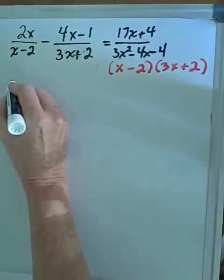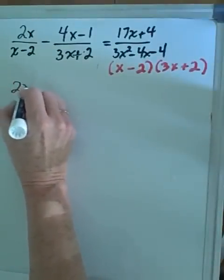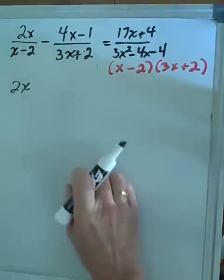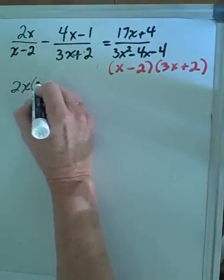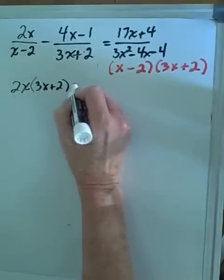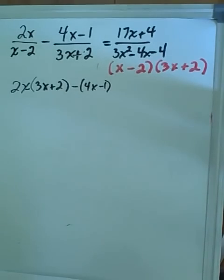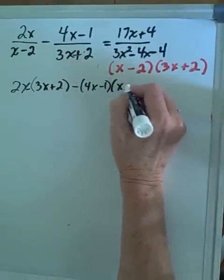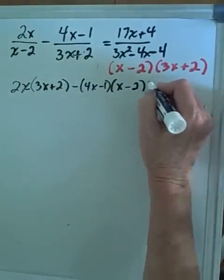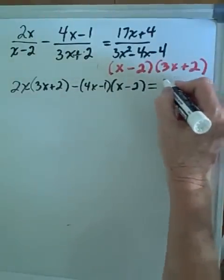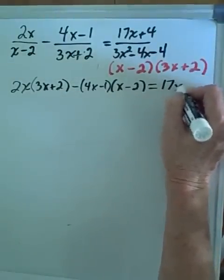For the first term 2x over x minus 2: the x minus 2 cancels, leaving 2x times 3x plus 2. For the second term with 4x minus 1 over 3x plus 2: the 3x plus 2 cancels, leaving x minus 2 times 4x minus 1. For the last term, since its denominator matches the common denominator exactly, everything cancels, leaving just 17x plus 4.